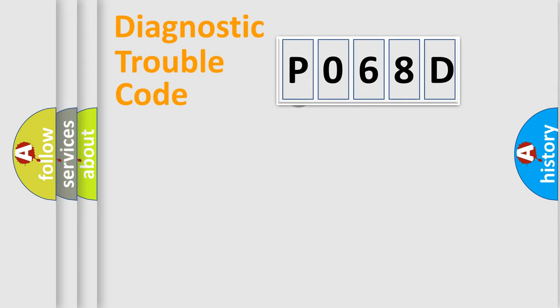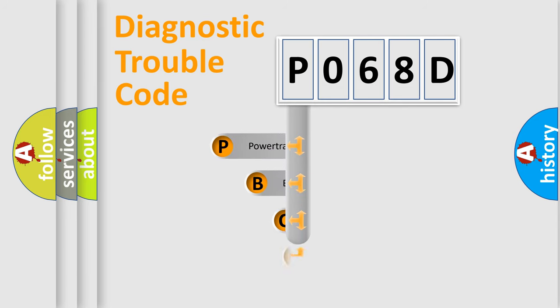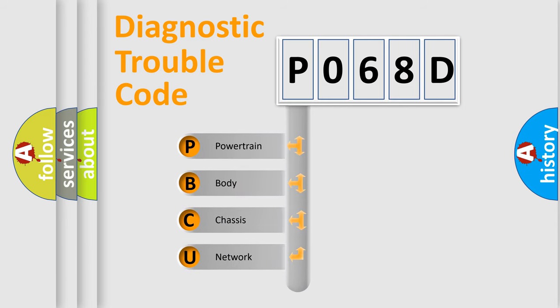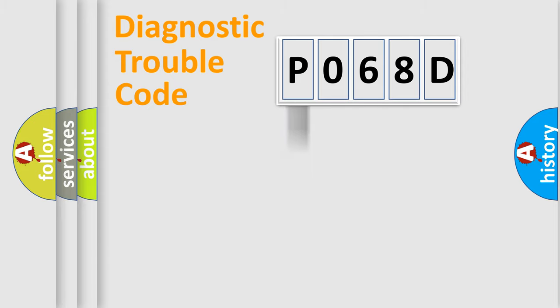First, let's look at the history of diagnostic fault code composition according to the OBD2 protocol, which is unified for all automakers since 2000. We divide the electric system of an automobile into four basic units: Powertrain, Body, Chassis, and Network. This distribution is defined in the first character of the code.